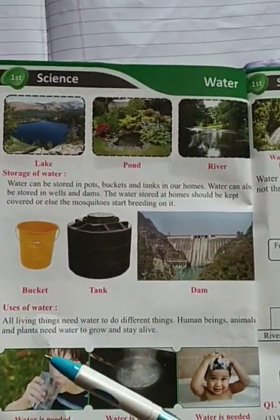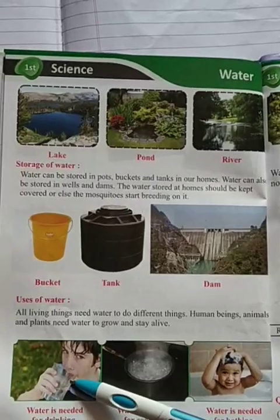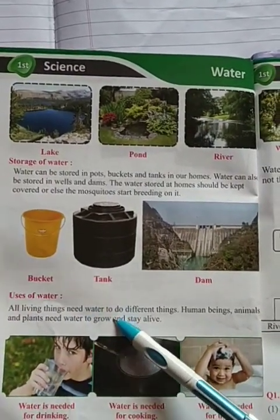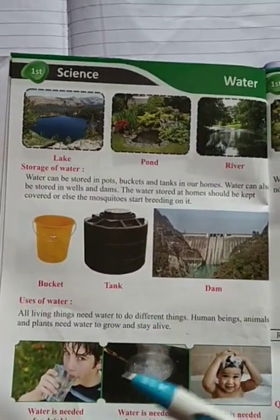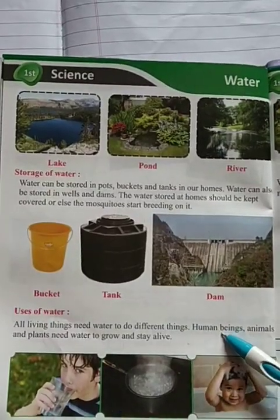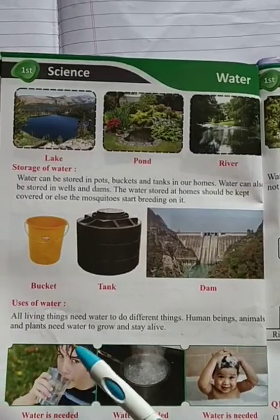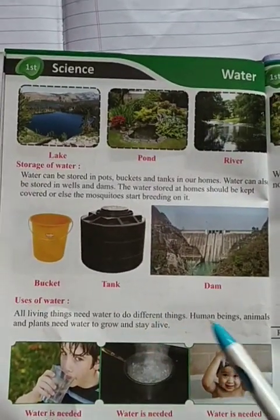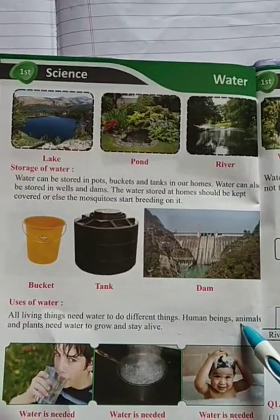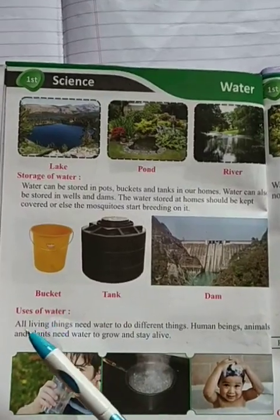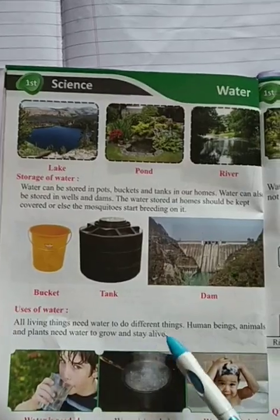Our next topic is uses of water. Where should we use water? Living things need water to do different things. Human beings, animals, and plants need water to grow and stay alive.